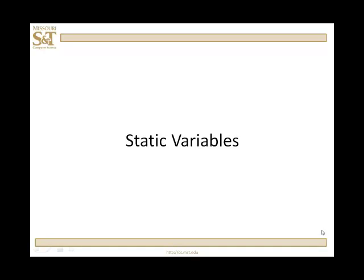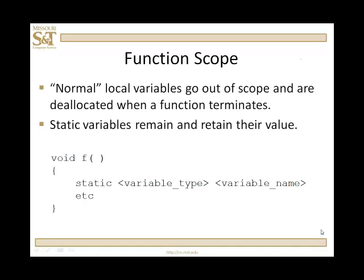They go out of scope and are deallocated. Those are non-static variables. You might be thinking, sometimes it would be really nice to be able to retain the value from a variable in a function. You can do that with static variables. Local variables that are normal, non-static variables, when they go out of scope, they're deallocated, but static variables remain and they retain their value.